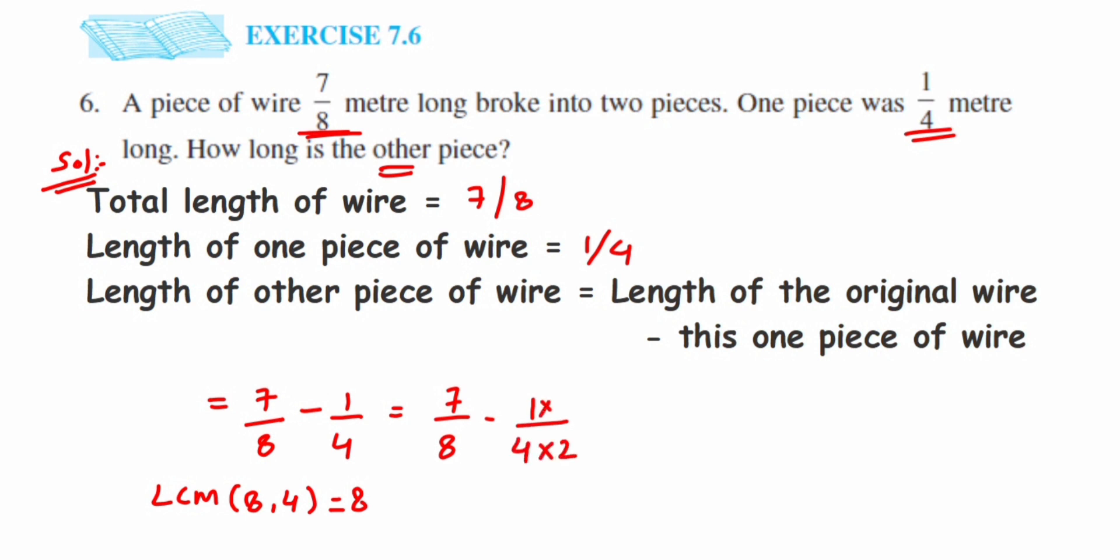It's like finding an equivalent fraction. So 7/8 minus 2/8. Now you can see they are like fractions, so we can subtract the numerators. 8 in the denominator, and subtract the numerators: 7 minus 2, which is 5. So 5/8. That's it, it was a simple question. The length of the other piece is 5/8 meter.